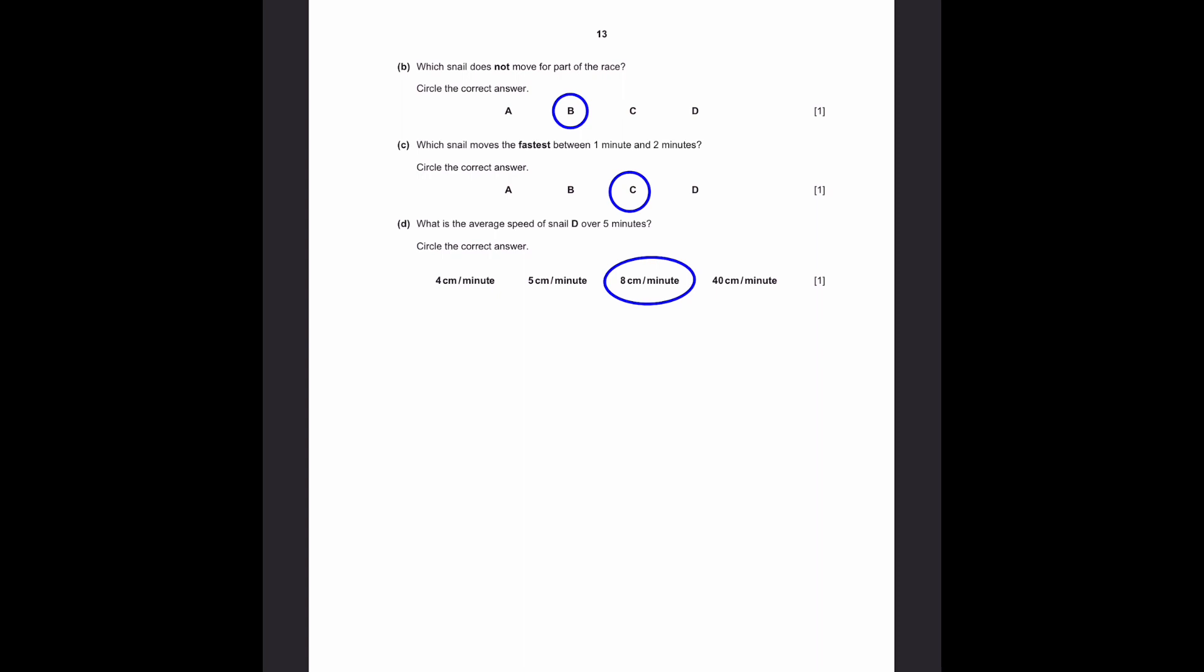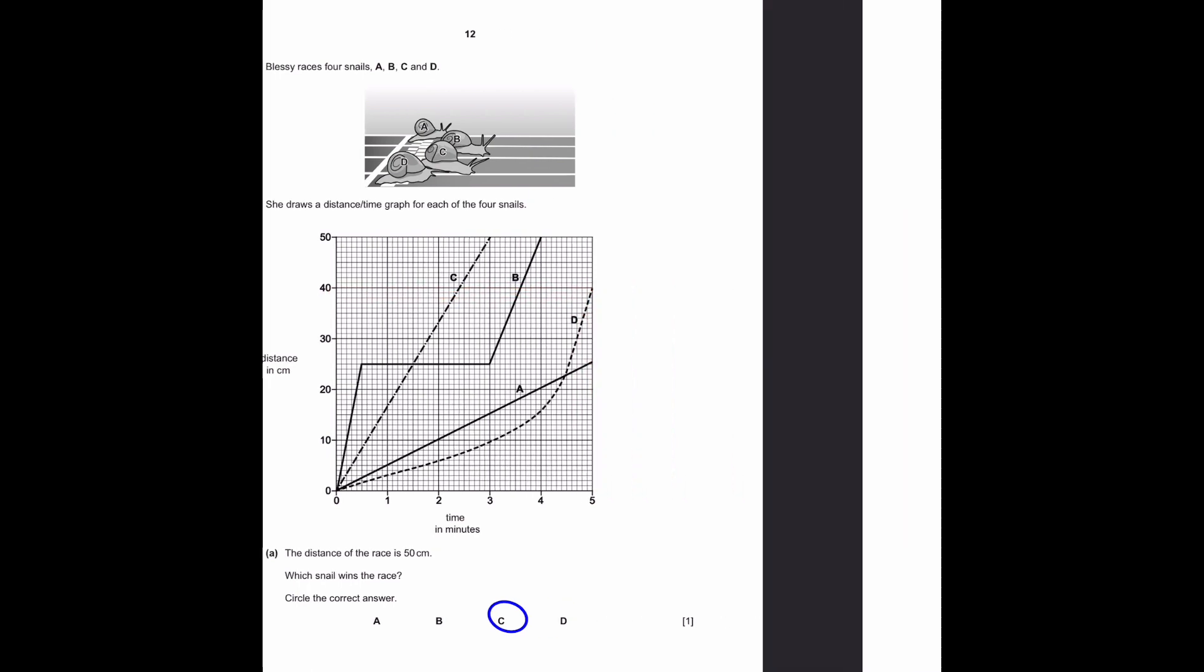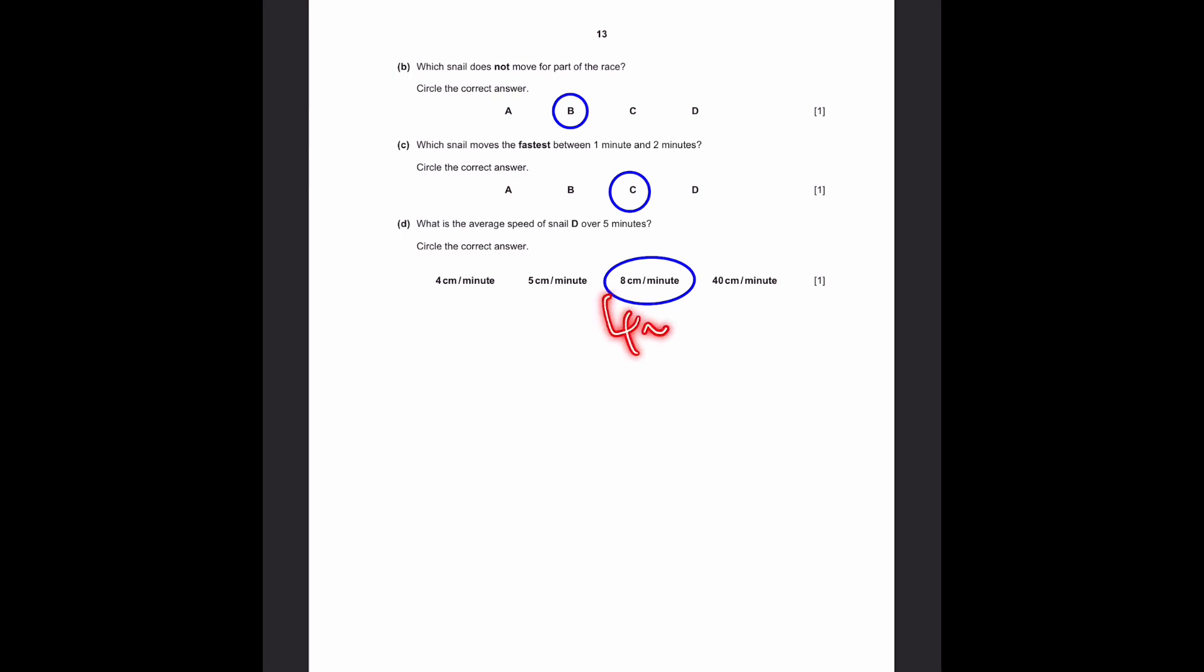What's the average speed of snail D over 5 minutes? Circle the correct answer. The average speed of snail D will be distance traveled by the time. So, snail D travels 40 centimeters in 5 minutes. So, it'll be 40 by 5, which is 8 centimeters per minute. That's the answer.